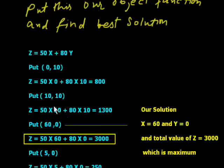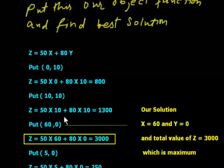Now second corner point I am taking: 50 into 10 plus 80 into 10, this is 1300.